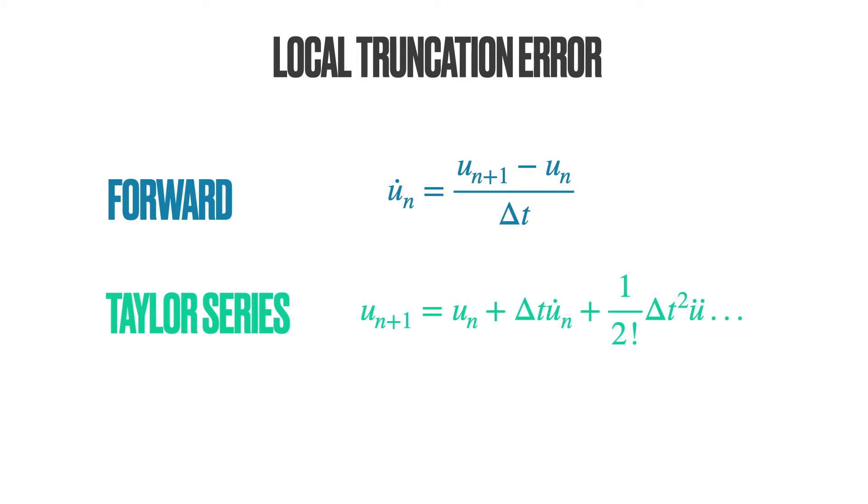If we use the forward Taylor expansion, we obtain the following expression. You all know this expression from school. We can rewrite this expression in terms of the velocity. Now, things become interesting. The first term on the right-hand side is the same as the forward Euler approximation. Thus, comparing both these equations, we find that the forward Euler does not replicate the term shown in red.